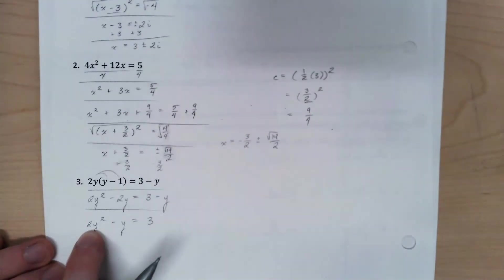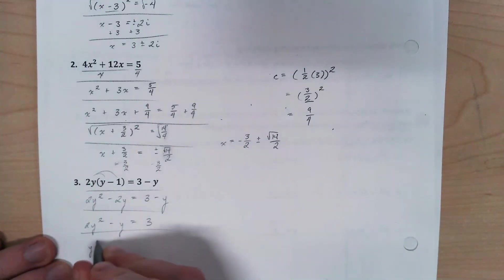So I'm going to divide both sides by my a value. In this case, by 2. So you have y squared minus 1 half y is 3 over 2.